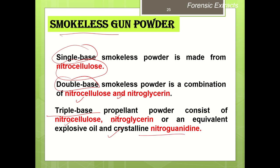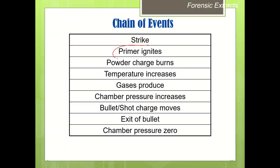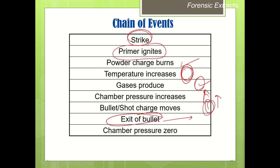The chain of events during firing begins when the striking pin hits the primer, causing it to ignite. This causes the powder charge to burn, increasing temperature and producing gases. Chamber pressure increases, and the bullet or shot charge moves out of and comes out of the barrel, after which chamber pressure reduces to zero.